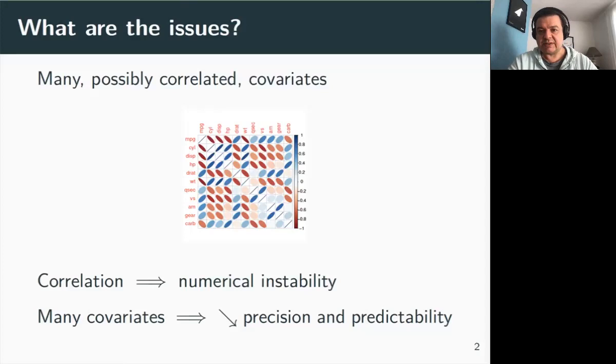What are the issues with having many and possibly correlated covariates? Correlation generates numerical instability in the estimation of parameters and also having many covariates in the model implies a lack of precision in these estimates and the loss of predictability when it comes to using these models to forecast things like the viability of endangered species.